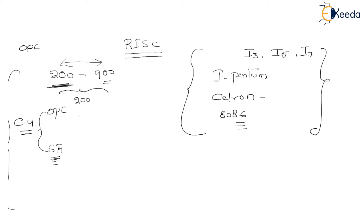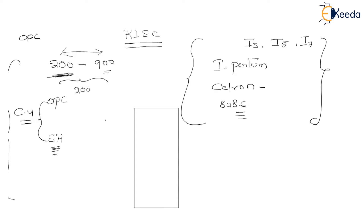Every time an instruction is getting executed, we may require to access main memory. This access to the main memory tends to be time consuming. If an operand is already available in a processor's register, accessing it doesn't take any time at all. But if we have to access the operand from the main memory, obviously it is going to consume a lot of time. So most of the instructions may require some memory operands, and at that time memory access is inevitable. You can't stop memory access, so obviously the complexity will be more and it is going to take some time.